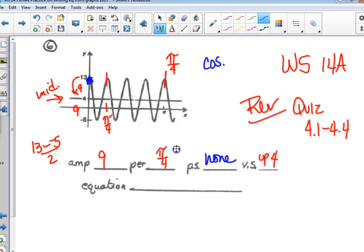Can we find b? b is 2 pi divided by the period of pi over 4, which would be 2 pi times 4 over pi. Sometimes 4 times 2 is 8. 2 times 4 is 8.